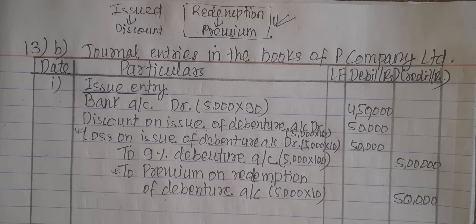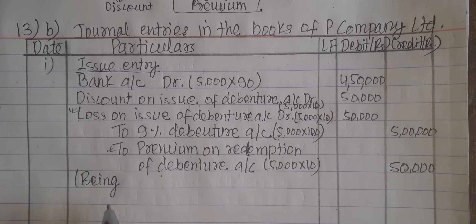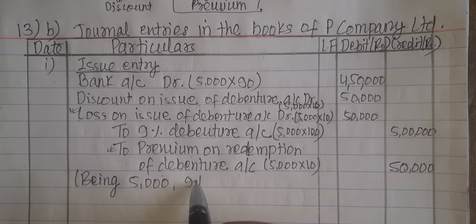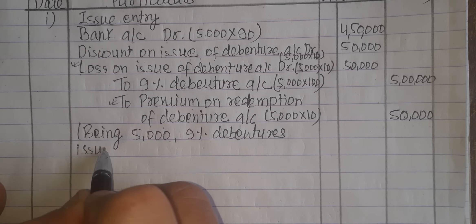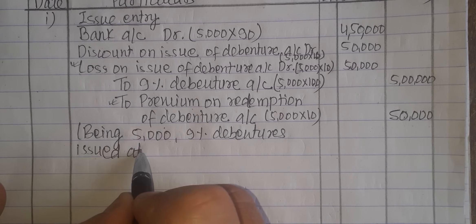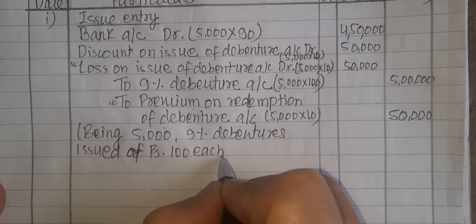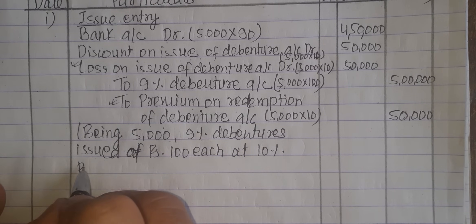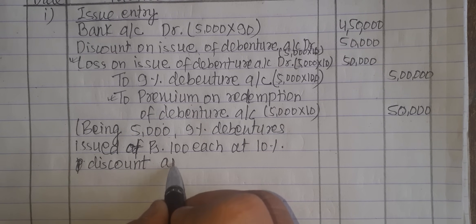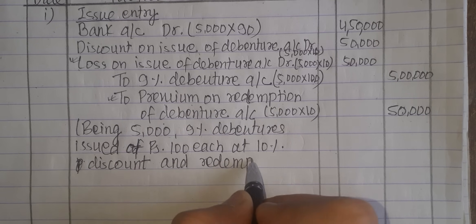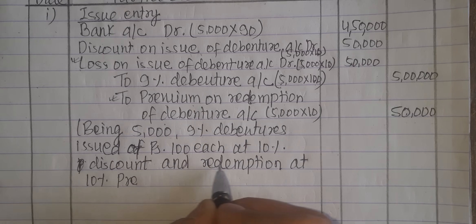Now let's write the narration: Being 5,000 9% debentures issued at rupees 100 each at 10% discount, and redeemable at 10% premium.